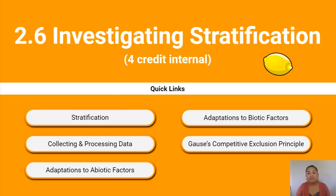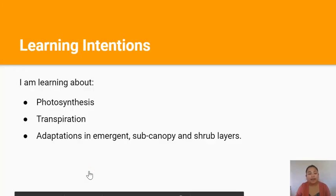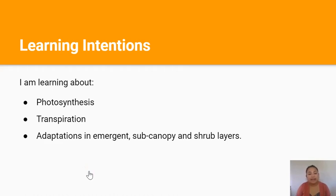Kia ora team, welcome back to the 2.6 video series. This lesson is going to be about adaptations to abiotic factors. In this lesson you'll be learning about photosynthesis, transpiration and adaptations in emergent, sub-canopy and shrub layers in the forest.